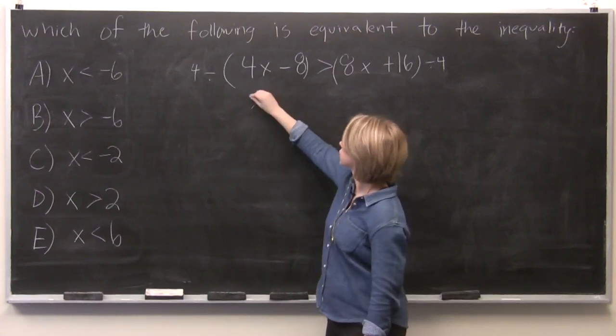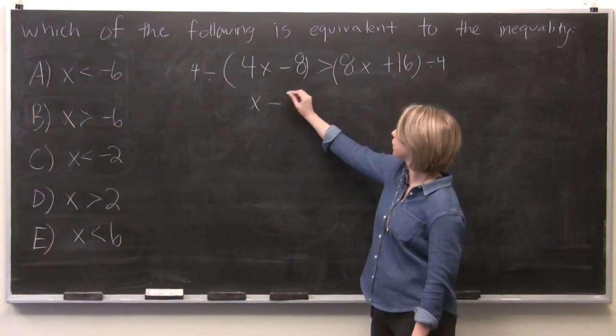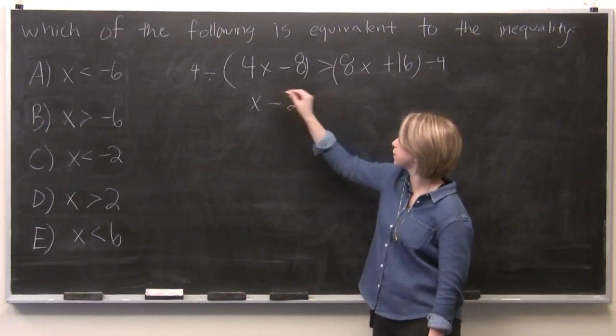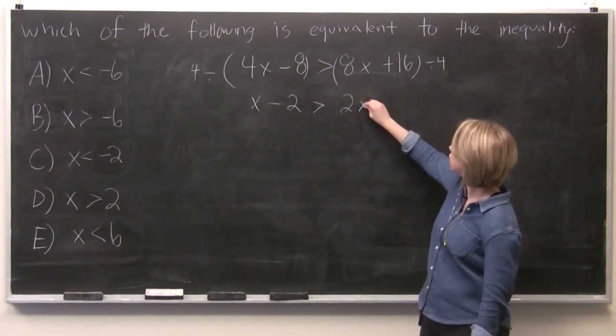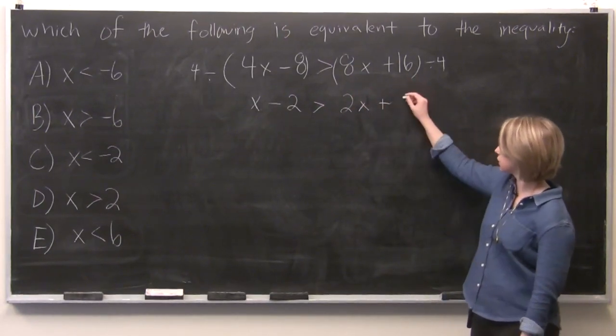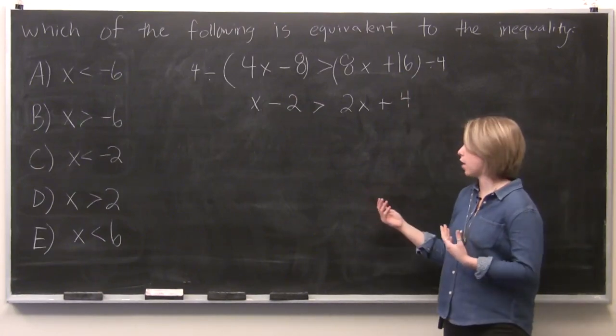So 4x divided by 4 is just 1x, and that's minus 2. 8 divided by 4 is 2, is greater than 8 divided by 4 is 2 again, plus 16 divided by 4 is 4. So now we've got a simplified inequality.